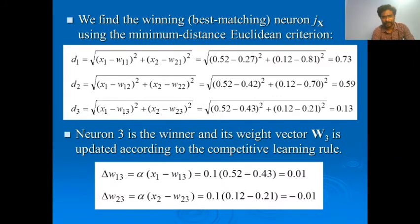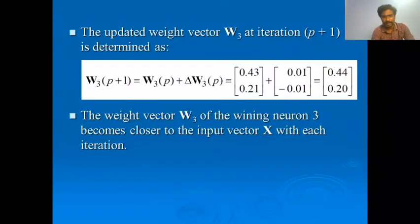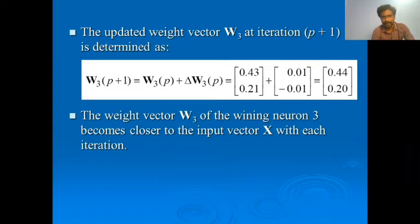Applying the competitive learning rule, the updated weight vector w3 at iteration p+1 is determined as: w3(p+1) = w3(p) + Δw3(p). After calculating this, we obtain the new weight vector w3, which corresponds to the winning neuron closest to the input vector x.